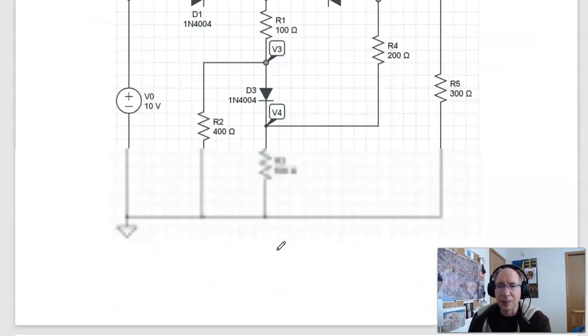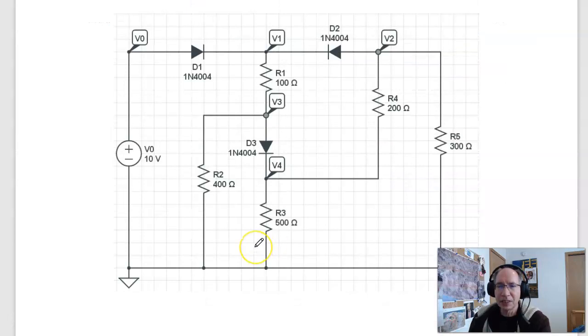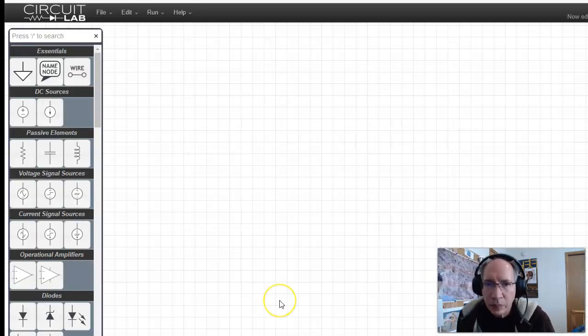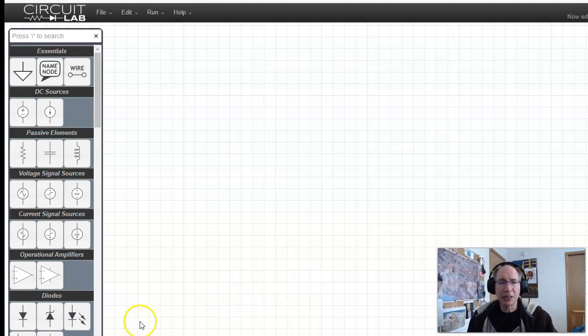And CircuitLab. I can build the circuit and then simulate it. So CircuitLab is a really nice, friendly program. It's a drag and drop program we've used a couple times. So here's my voltage source. That'll be my 10-volt source. Here's the first diode. I'm not going to do the whole circuit, but kind of give the idea behind it.